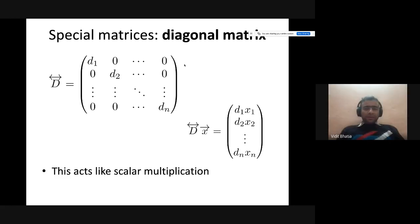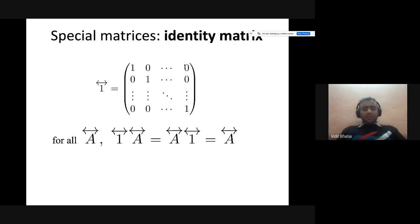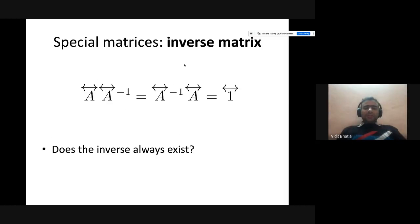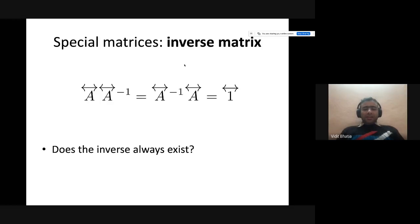A diagonal matrix has values only along the diagonal, with everything else being zero. An identity matrix has ones on the diagonal — if you multiply a matrix with the identity matrix, the result is the same matrix. An inverse matrix, when multiplied with a matrix, gives the identity as the result. For the inverse to exist, the rank of the matrix must be less than the dimension by one.